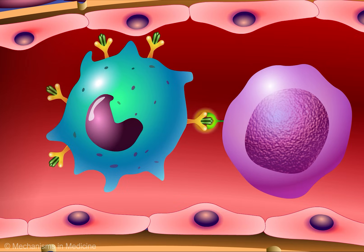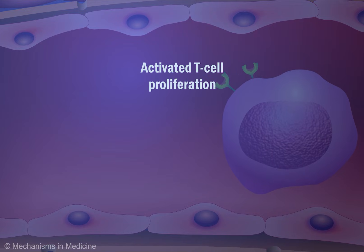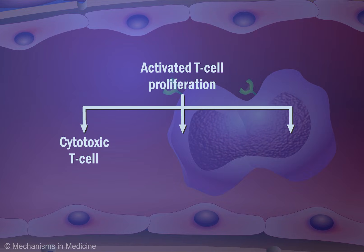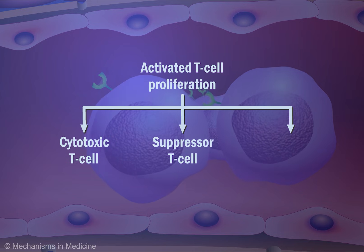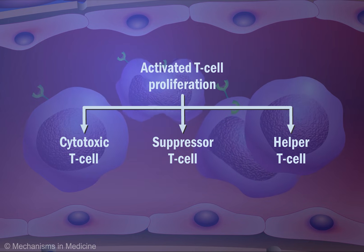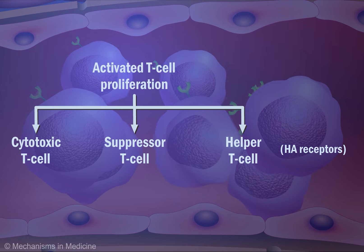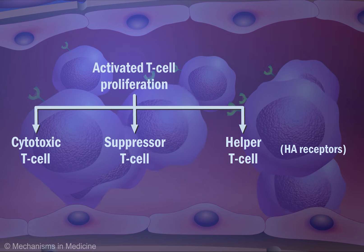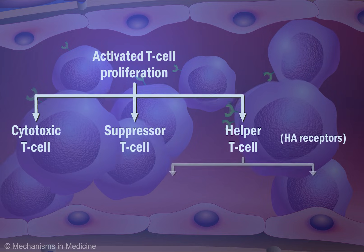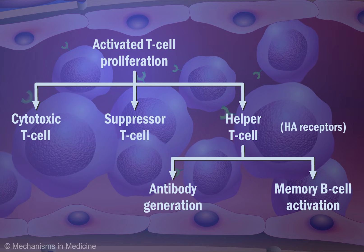Upon binding to the MHC receptor, T-cells become activated and proliferate into either cytotoxic T-cells, regulatory suppressor T-cells, or helper T-cells. Activated helper T-cells express hemagglutinin receptors specific to the vaccine strand on their surface and play a major role in antibody generation and memory B-cell activation.